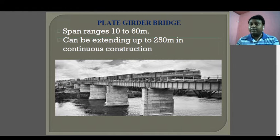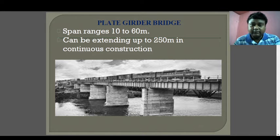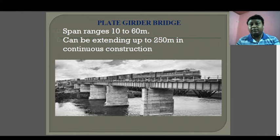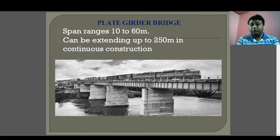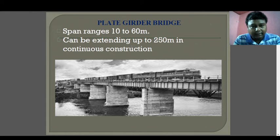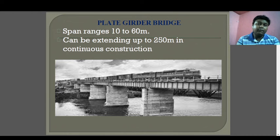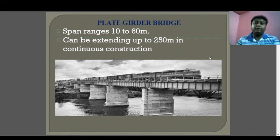Plate girder bridges have a span of 10 to 60 meters, extendable up to 250 meters in continuous construction. This is one of the most commonly seen bridge types in the Indian context. A plate girder bridge can be used for vehicular traffic movement or even for railway movement.